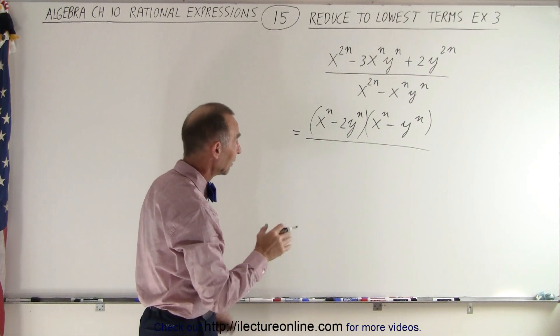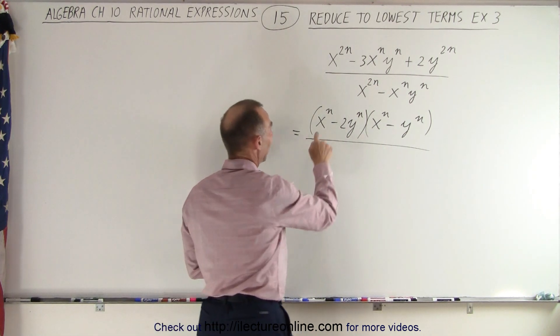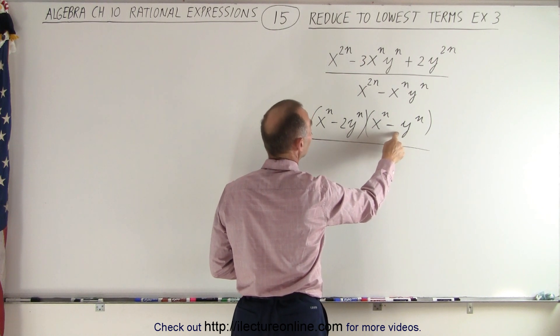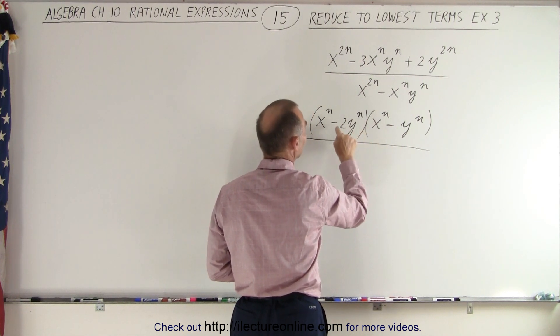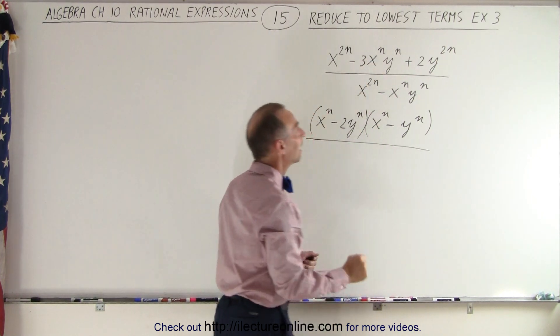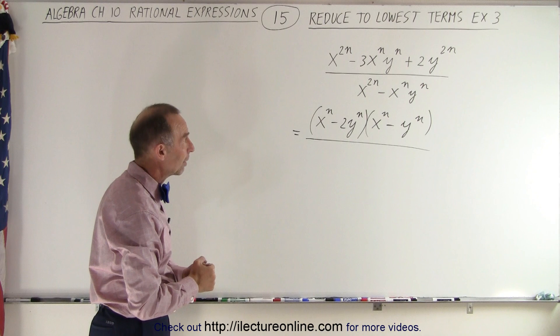Now I just need to make sure I get the middle term. x to the n times a negative y to the n is negative x to the n y to the n. If I multiply this times this, I get negative 2x to the n y to the n. Together is a negative 3x to the n y to the n, so I get the proper middle term.